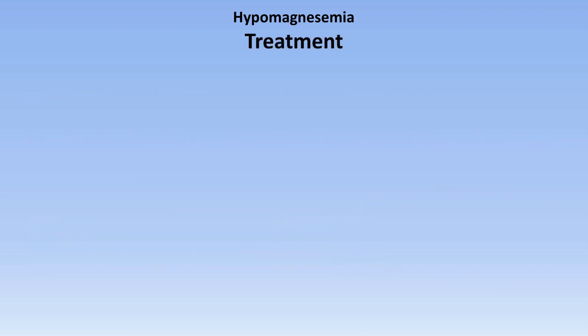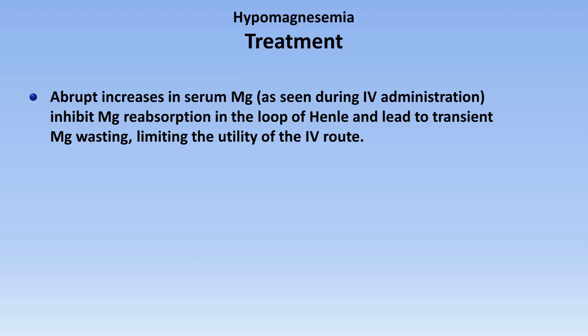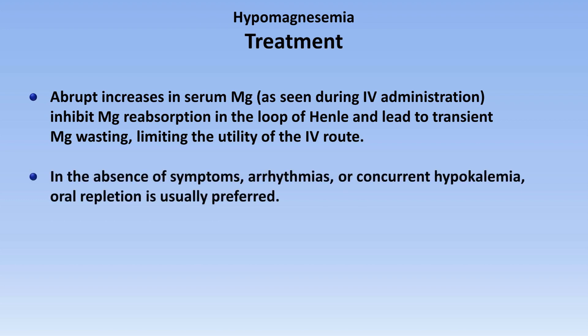When it comes to the treatment of hypomagnesemia, on one level it's simple - just give magnesium. On another level though, it can be a little tricky if one doesn't think hard enough about the situation. One reason for this is that abrupt increases in serum magnesium, as seen during IV administration, inhibit magnesium reabsorption and lead to transient wasting, which is obviously counterproductive. Therefore, in the absence of symptoms, arrhythmias, or concurrent hypokalemia, which greatly predisposes to arrhythmias, oral repletion is usually preferred.